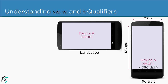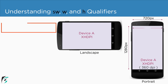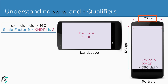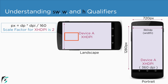Proceeding from the previous section, we know that the scale factor of an XHDPI device is 2. Using the scale factor, we can calculate the screen width in terms of DP. For that, you can divide 720 by 2, which comes out to be 360 dp. So the width in terms of DP is 360 in portrait mode. The width of portrait mode becomes the height in landscape mode, so in landscape mode we have the height in terms of DP as 360.